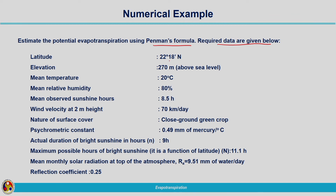The data given are: latitude 22 degrees 18 minutes, elevation 270 meters above mean sea level, mean temperature 20 degrees Celsius, mean relative humidity 80%, mean observed sunshine hours 8.5 hours, wind velocity at 2 meter height 70 km/day, surface cover: close ground green crop, psychrometric constant 0.49 mmHg per degree Celsius, actual duration of bright sunshine 9 hours, maximum possible sunshine hours 11.1 hours, mean monthly solar radiation at top of atmosphere Ra = 9.51 mm of water per day, reflection coefficient (albedo) = 0.25.